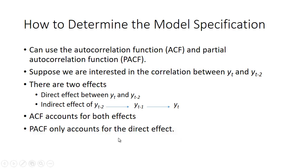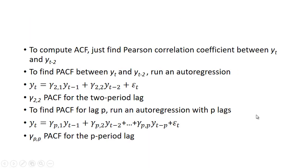The autocorrelation function accounts for both of these effects. The partial autocorrelation function only accounts for the direct effect between y_(t-2) and y_t. To find the autocorrelation function, we can just compute the Pearson correlation coefficient between y_t and y_(t-2). To find the partial autocorrelation function between y_t and y_(t-2), we run an autoregression.